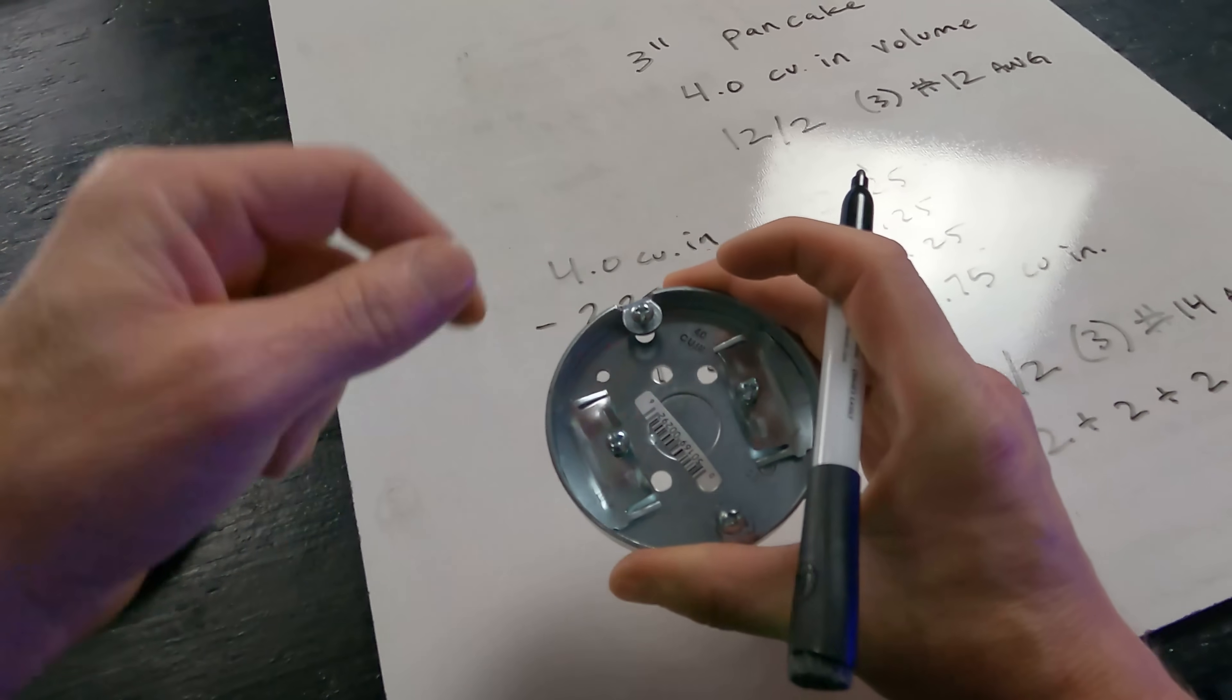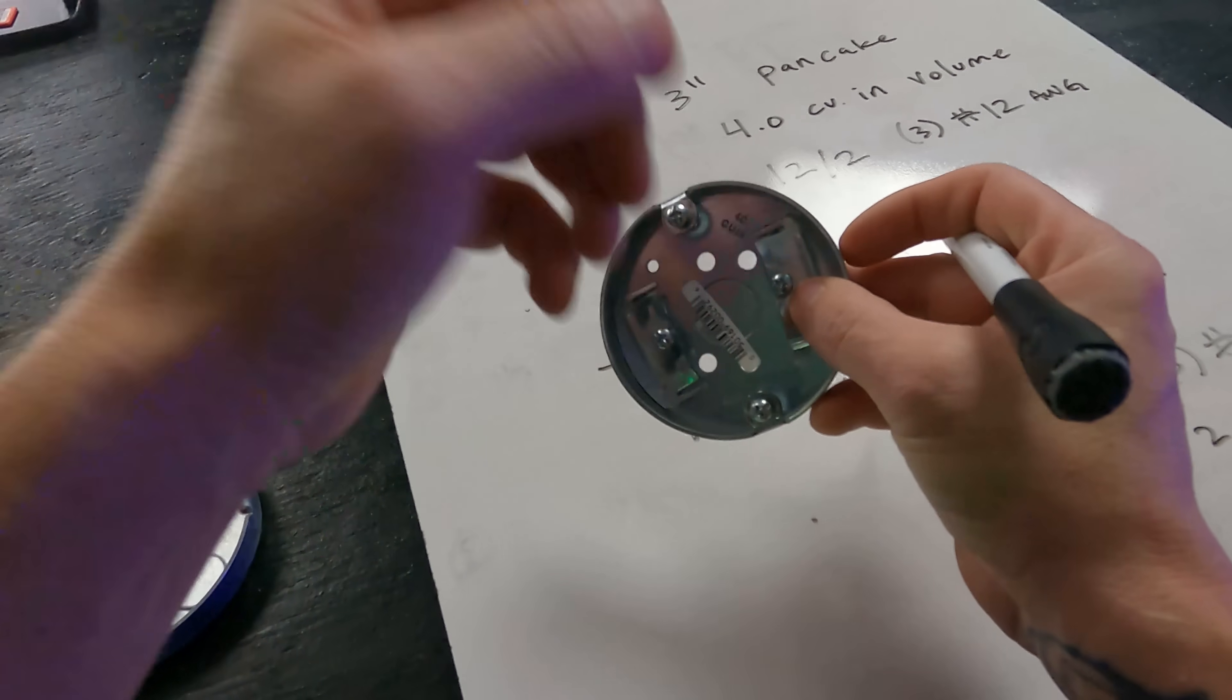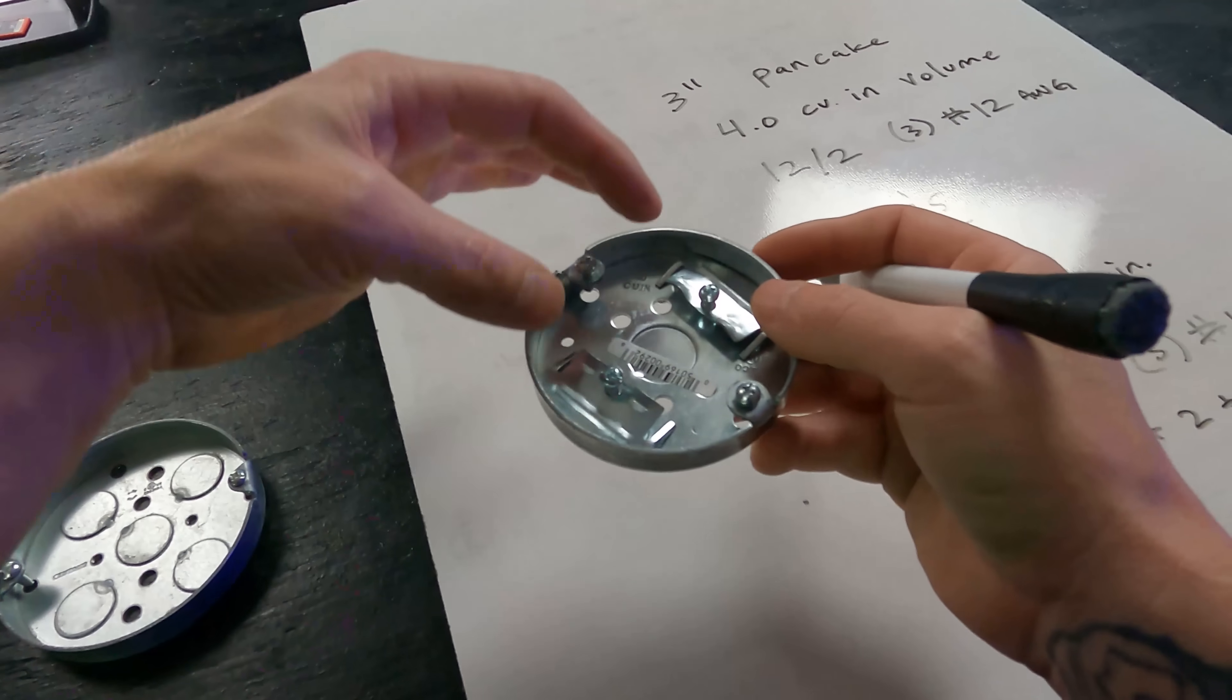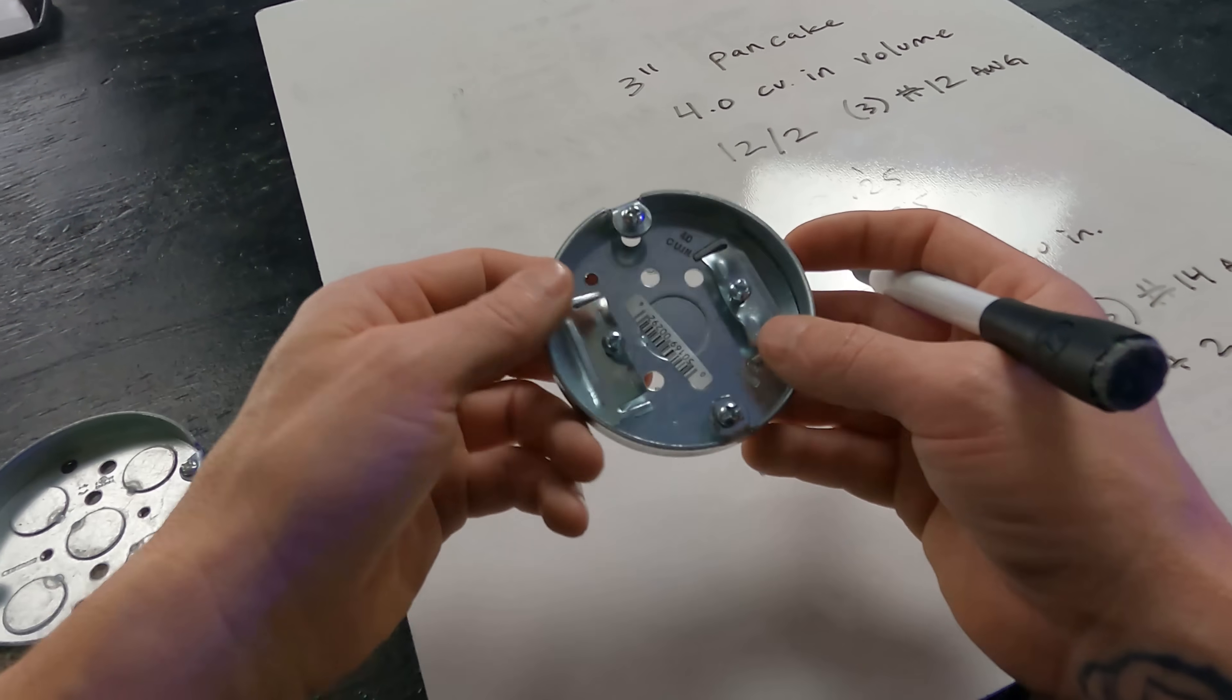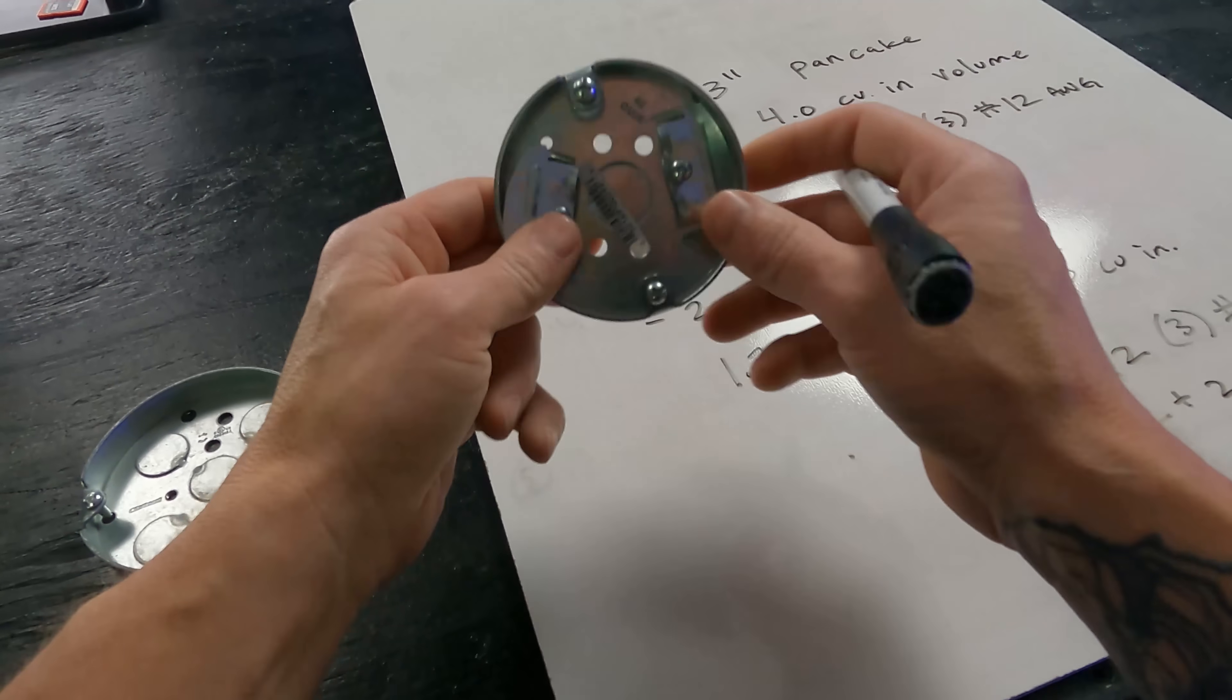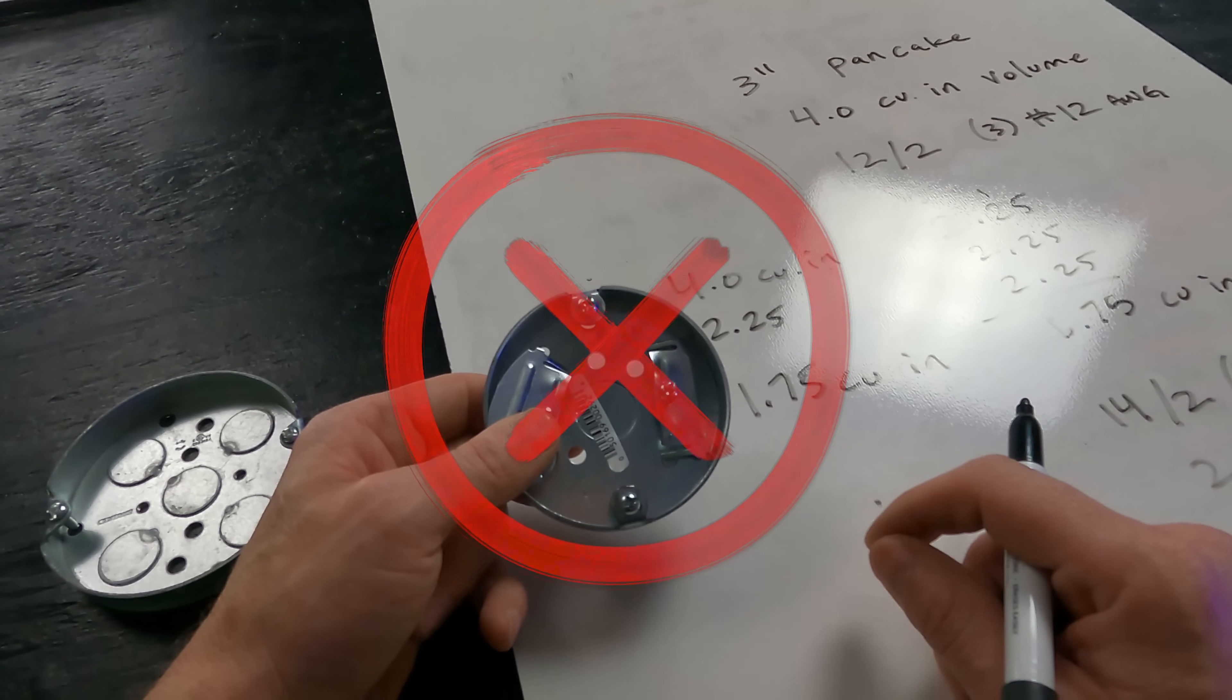You could put fixture wires in them, like really small fixture wires, because number 18 is only 1.5 cubic inches. But this is only four cubic inches and it's got the clamps in it. You can take these clamps out, but these things are completely against code almost every situation you could possibly use them in.